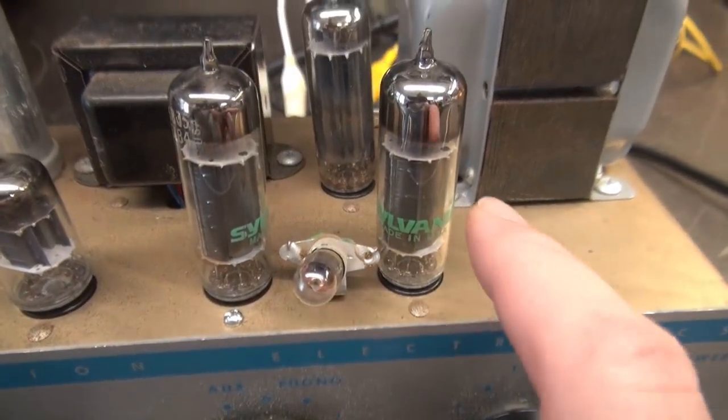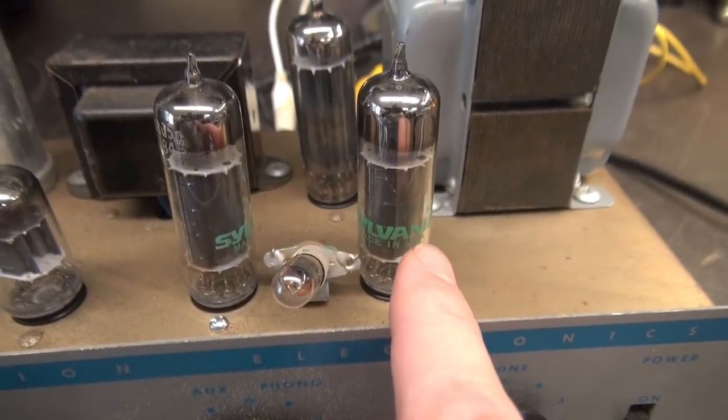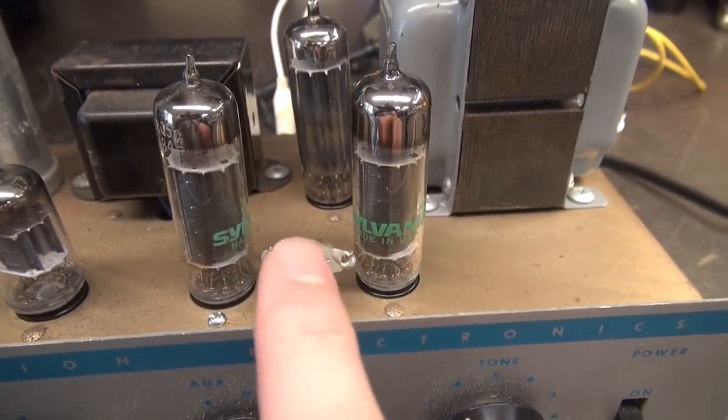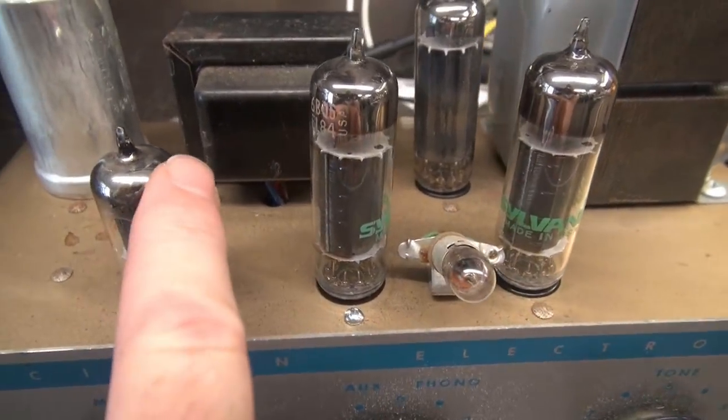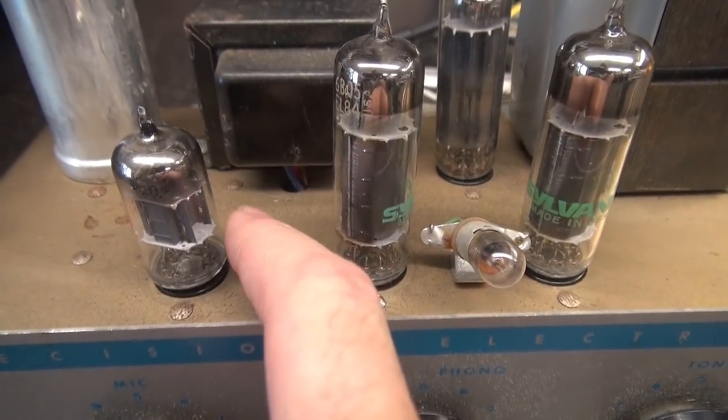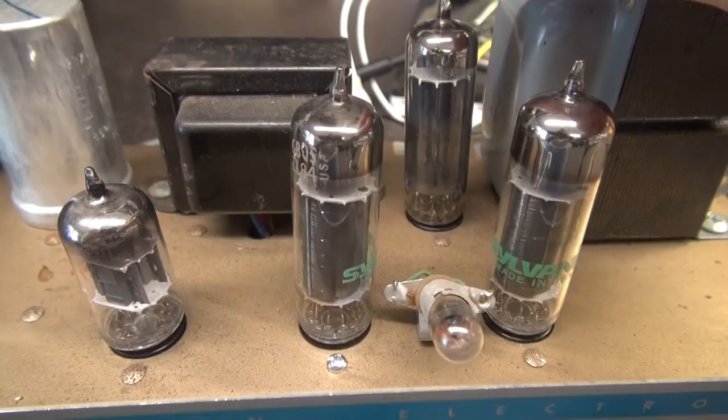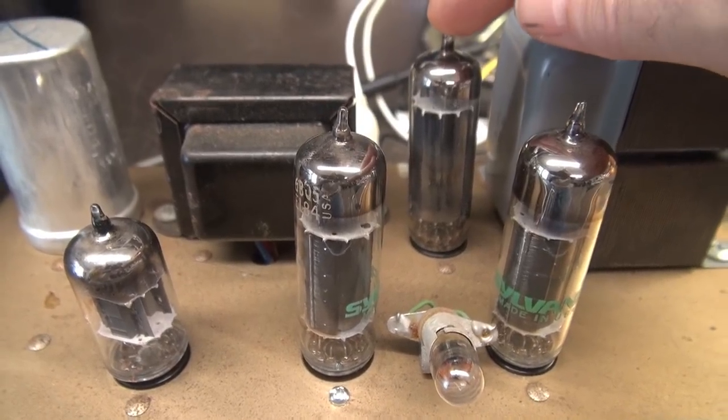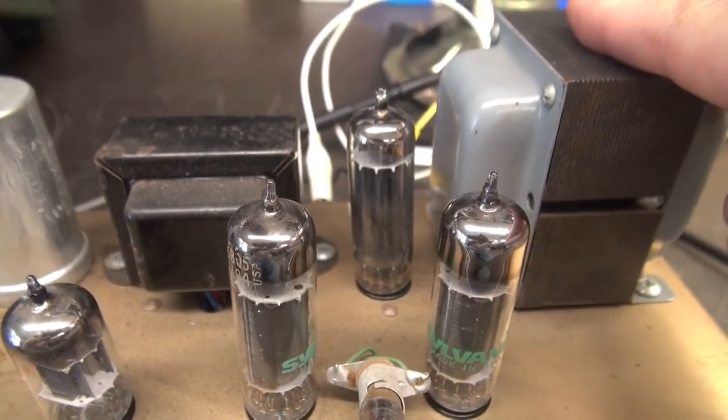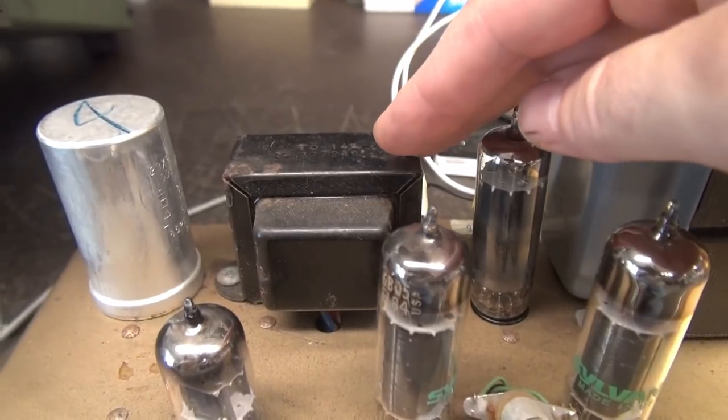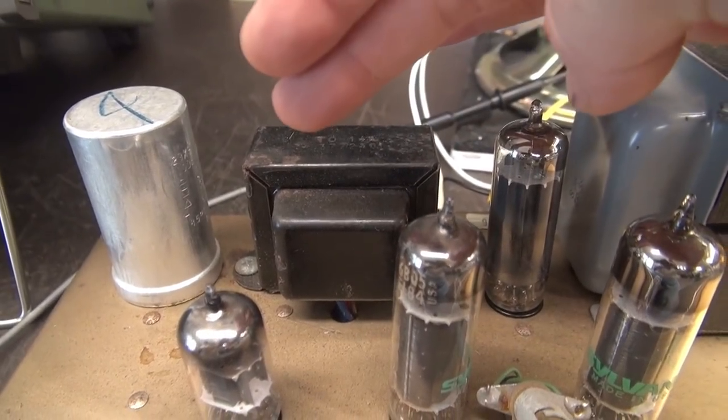The tubes: you can see a nice pair of Sylvania 6BQ5s. This is your idiot light in between. A 6EU7 is the preamp plus phase inverter and back here is a 6BQ4 rectifier. It's got the original power transformer and output transformer and electrolytic cap.